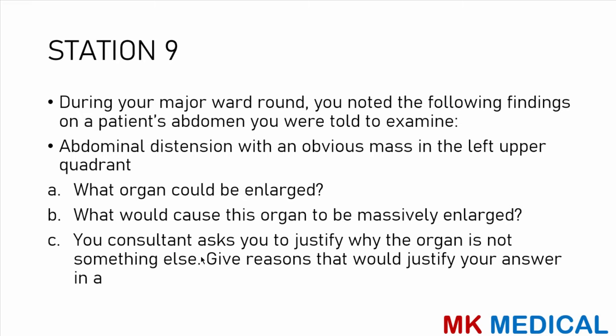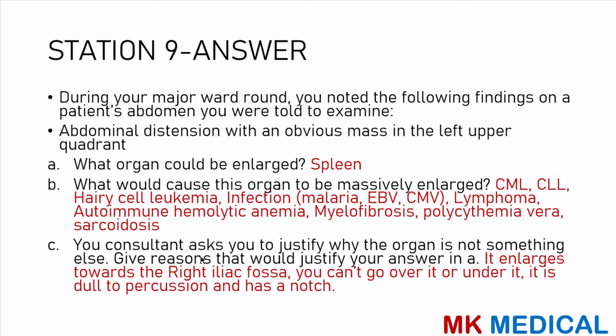Station 9: during your major ward round you note abdominal distension with an obvious mass in the left upper quadrant. What organ could be enlarged? What would cause this organ to be massively enlarged? The organ is most obviously the spleen. Causes of massive splenomegaly include chronic myeloid leukemia, chronic lymphoid leukemia, hairy cell leukemia, infections such as malaria, EBV, and CMV, lymphomas, autoimmune hemolytic anemias, myelofibrosis, polycythemia vera, and sarcoidosis. To justify it is a spleen: it enlarges towards the right iliac fossa, you cannot go above it, you can go below it, it is dull to percussion, and it has a notch you can feel on palpation.